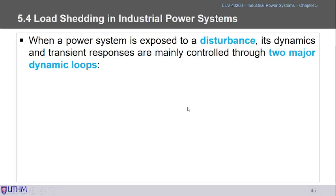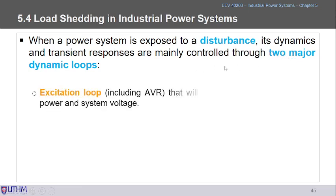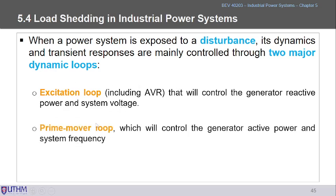When an industrial power system is exposed to a disturbance, two major dynamic loops respond: the excitation loop, which corrects system voltage, and the prime mover loop, which corrects system frequency through governor control.